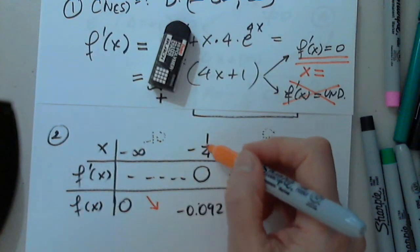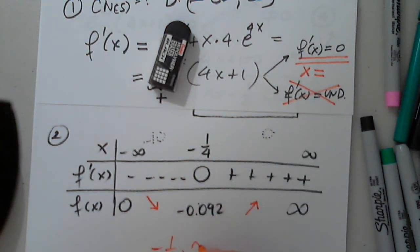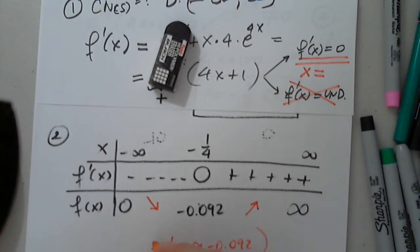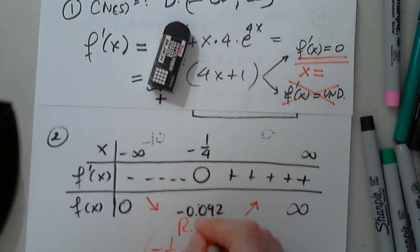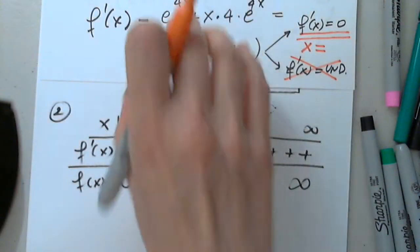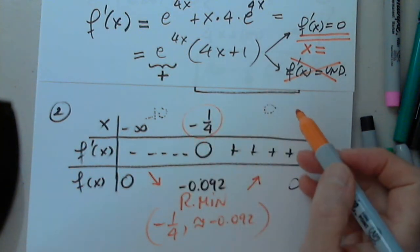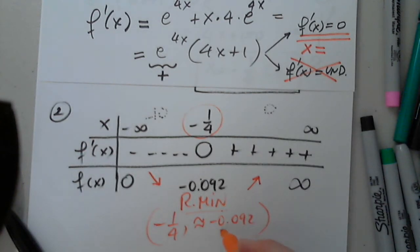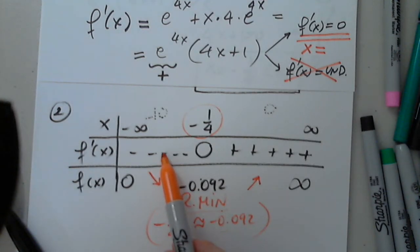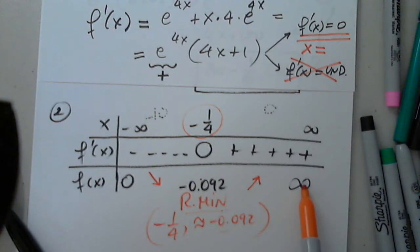What type of point is negative one-fourth comma approximately negative 0.092? A minimum — very good. This is a relative minimum. So the critical number we determined turned out to be an extremum — a relative minimum at negative one-fourth, approximately negative 0.092. From zero to a negative number the function is decreasing, supported by the sign of the first derivative. From that negative number to infinity, the function is increasing, also supported by the sign of the derivative.